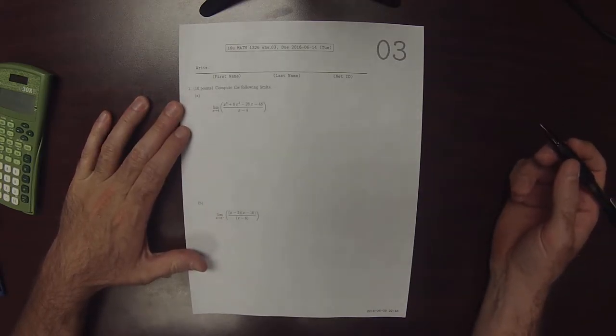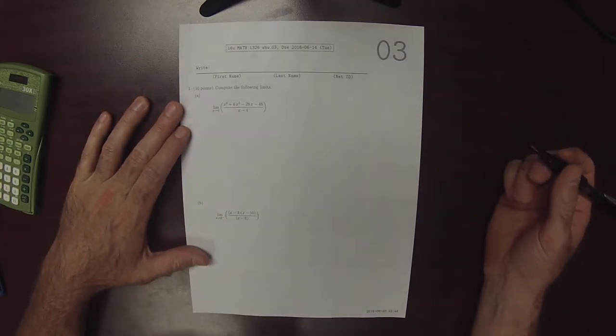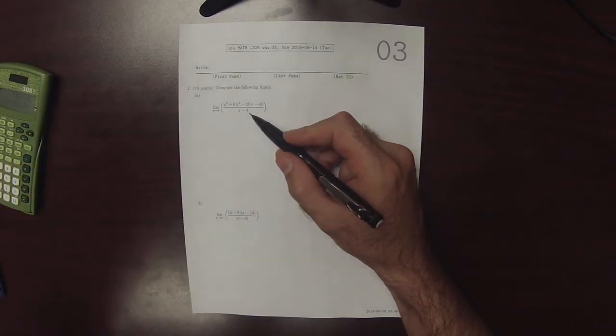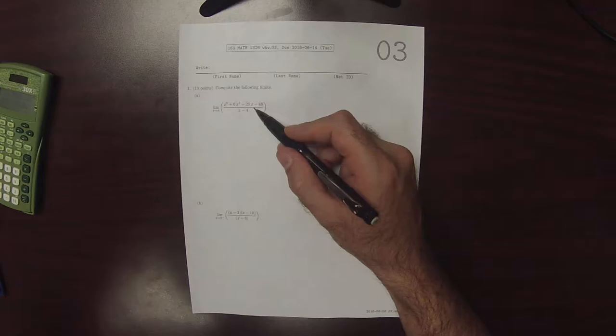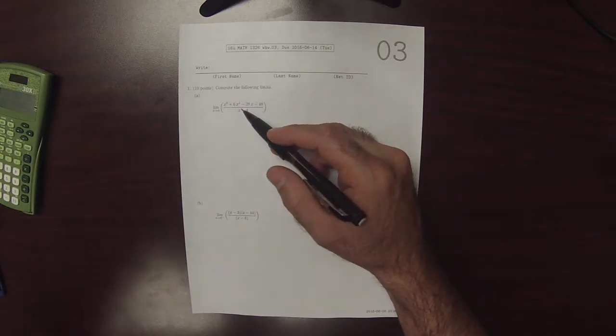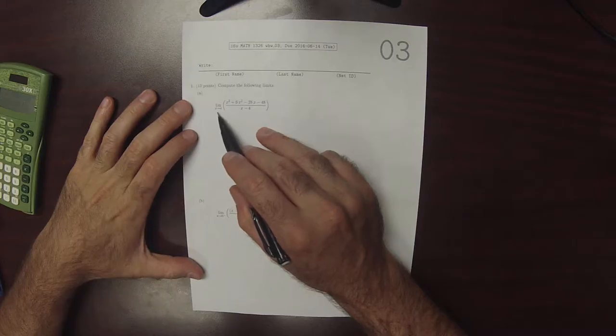This is the solution to written homework 3. We have a limit of a rational function, the ratio of two polynomials. The limit is at x equals 4.